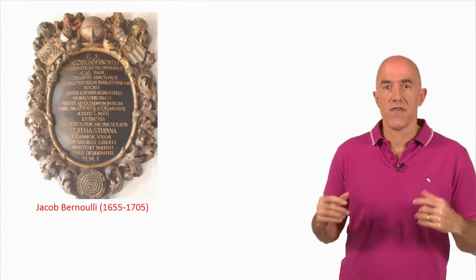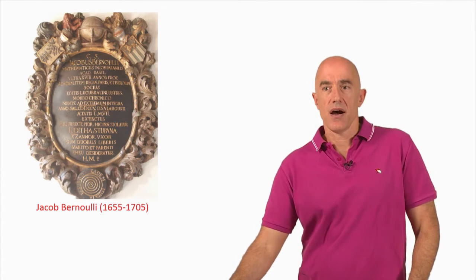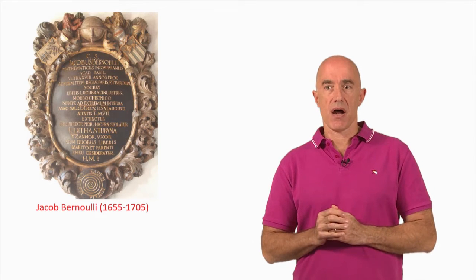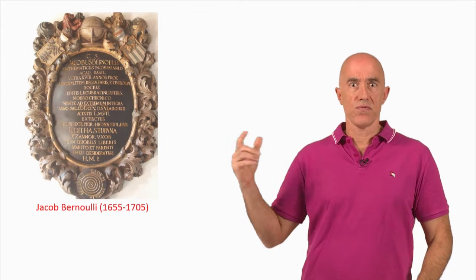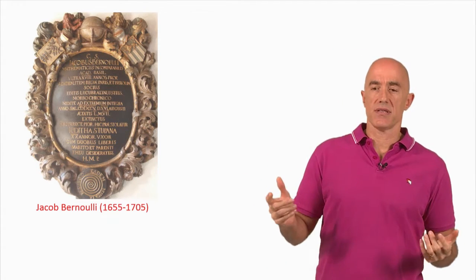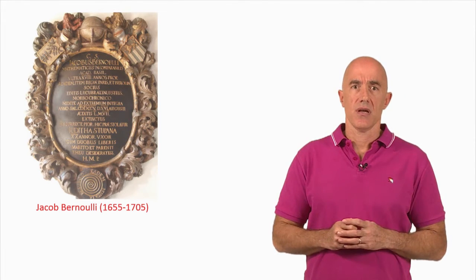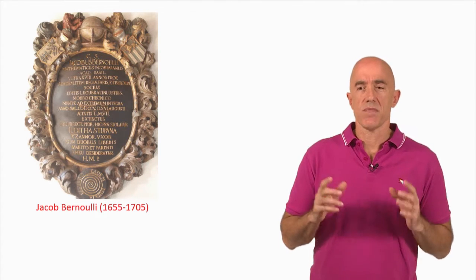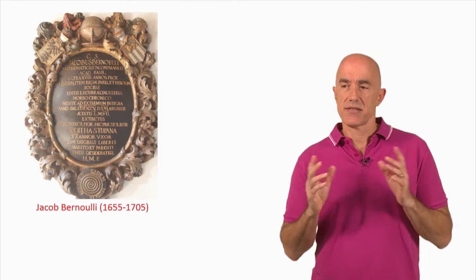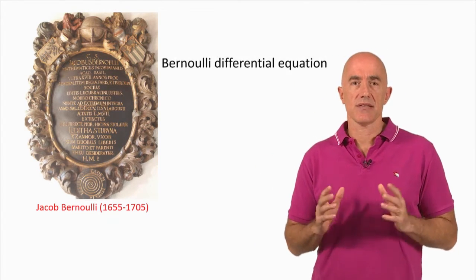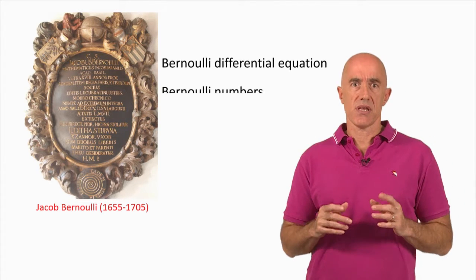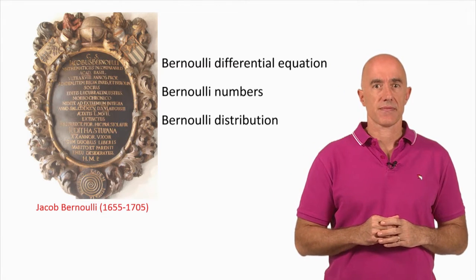The famous mathematician Jacob Bernoulli was very fond of the logarithmic spiral. Next to me here is his tombstone. Jacob Bernoulli was one of the Bernoulli family members — a group of famous mathematicians. He was one of the early proponents of calculus and, together with his brother Johan, a founder of the calculus of variations. Most notably, Jacob Bernoulli was a major contributor to probability theory, with the Bernoulli differential equation, Bernoulli numbers, and Bernoulli distribution named after him.